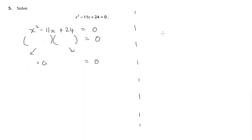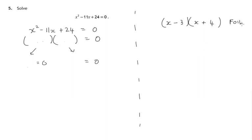You may not be familiar with the way I'm going to do this. What I would like to do first of all is concentrate on multiplying out something like x minus 3 times x plus 4, and use the FOIL method to multiply out. Then we'll use that method backwards to factorize this.